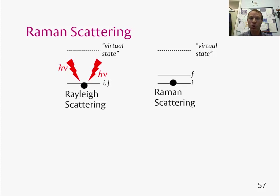We also have Raman scattering, where a molecule absorbs light, goes up to a virtual state, and then falls back down to a final state which is different to the initial state. When it emits energy as it falls back down, the frequency, or the energy of the light, is going to be different to the incoming light.